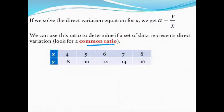When we solve the direct variation equation, which is y equals a times x for a, we get this: a equals y divided by x. And a, remember, is our constant of variation, which is kind of the same as slope.